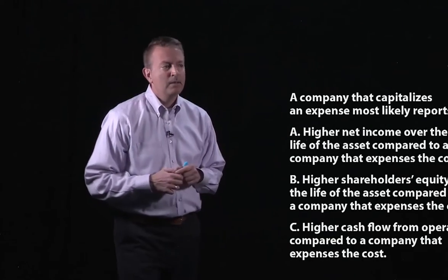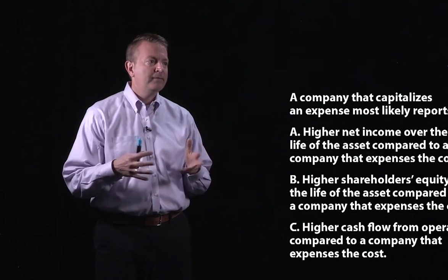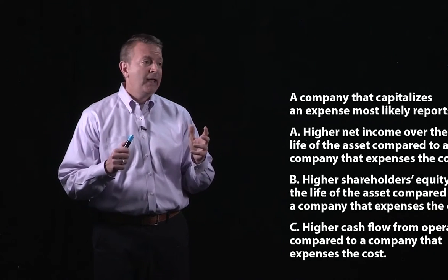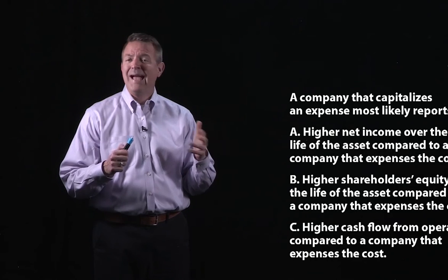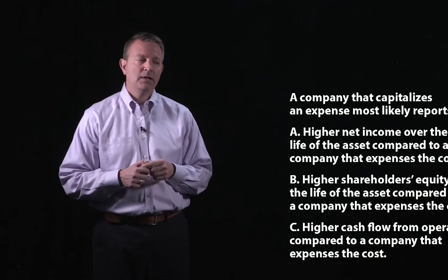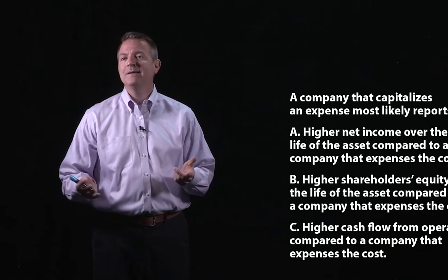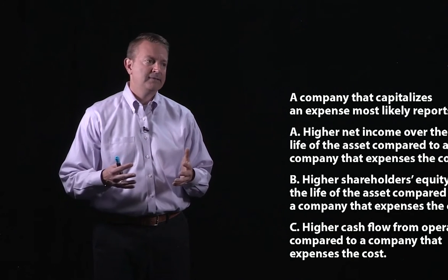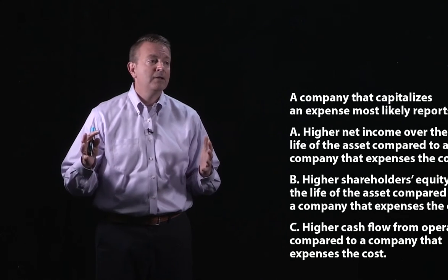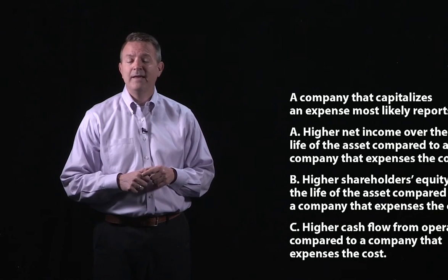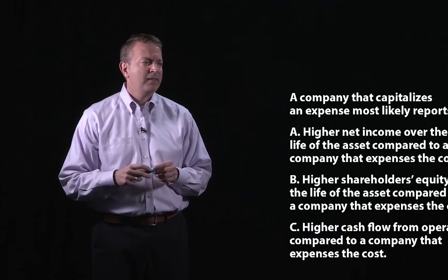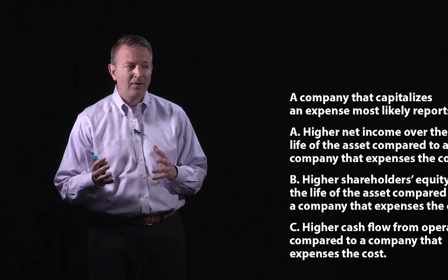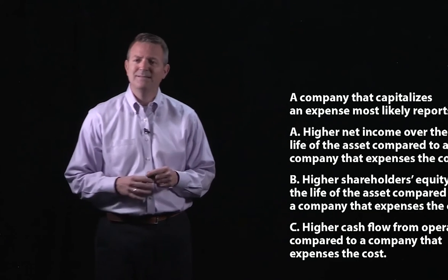Now, in this question, we're going to find out what the difference is, and they're going to give you some different types of answers. So let's take a look at this first question. You have a company that capitalizes instead of expensing something, and it asks you what most likely happens as you report this information. The first item says net income is going to be higher over the life of the asset. The next one says shareholders' equity is going to be better over the life of the asset. And the last one talks about cash flow from operations being higher compared to the company that expenses the cost.